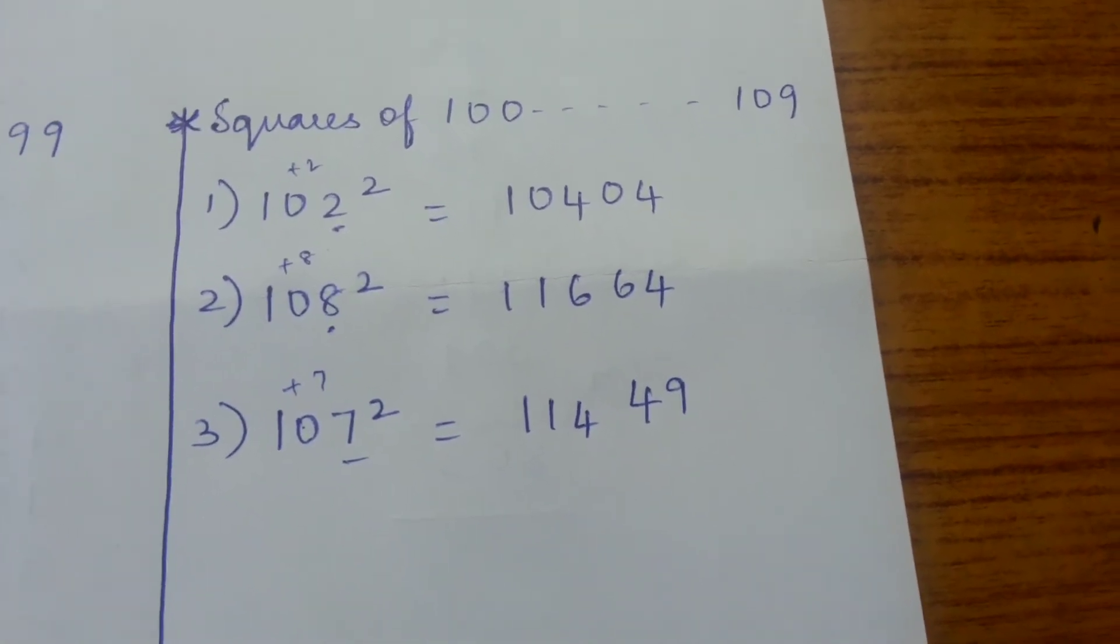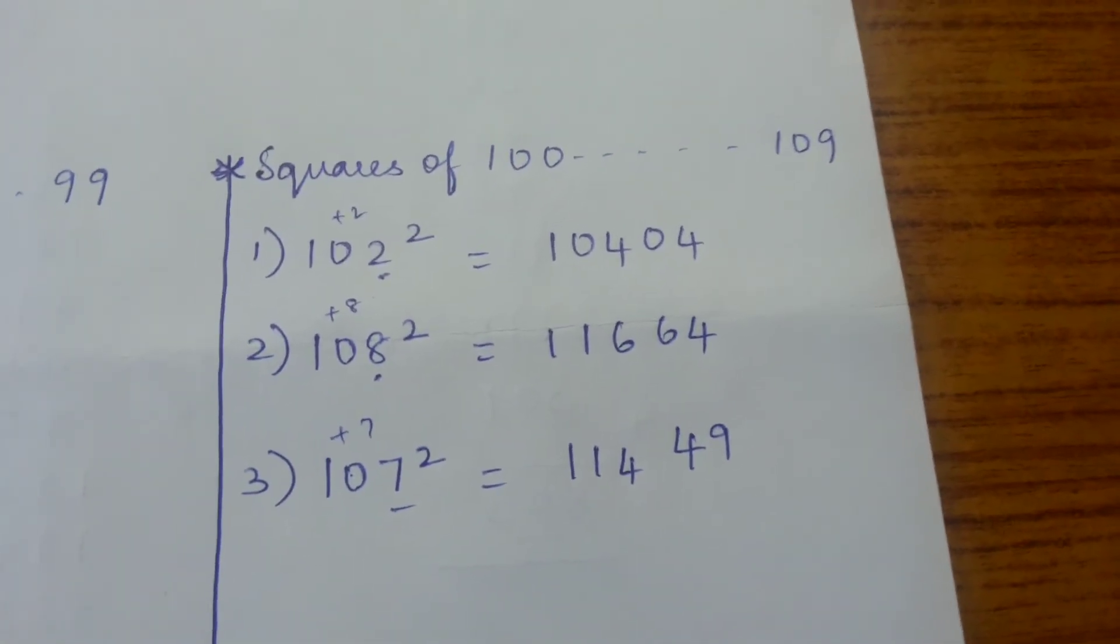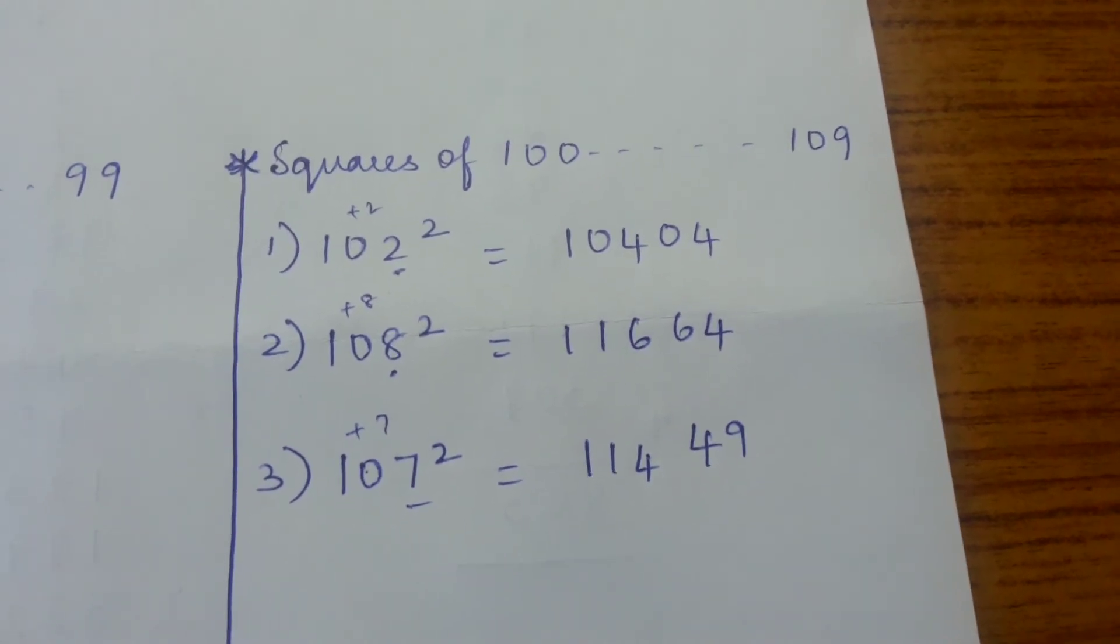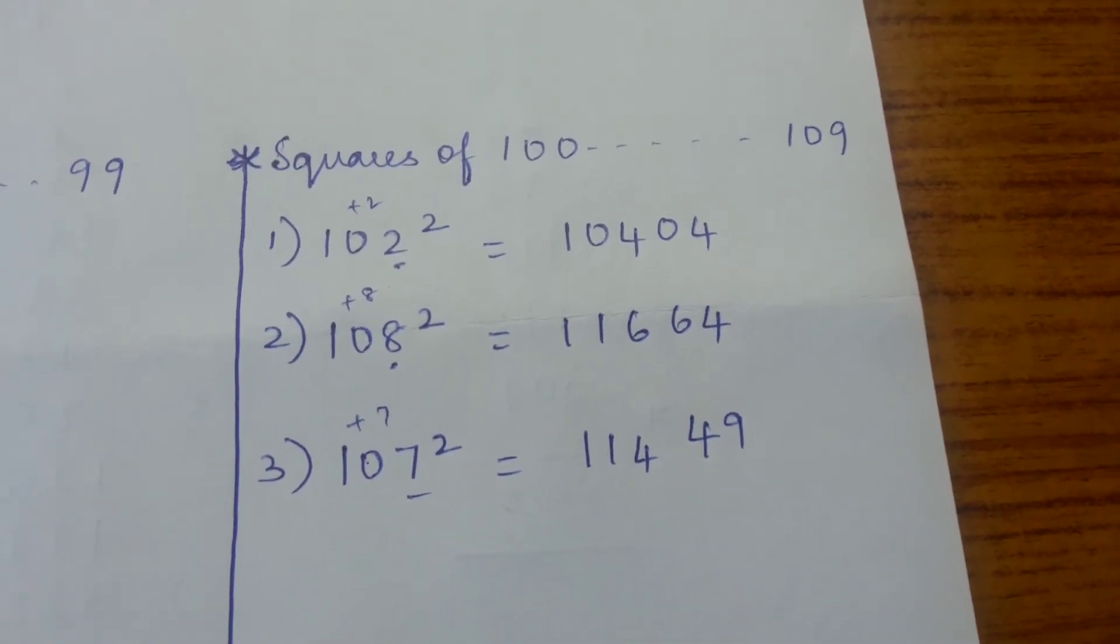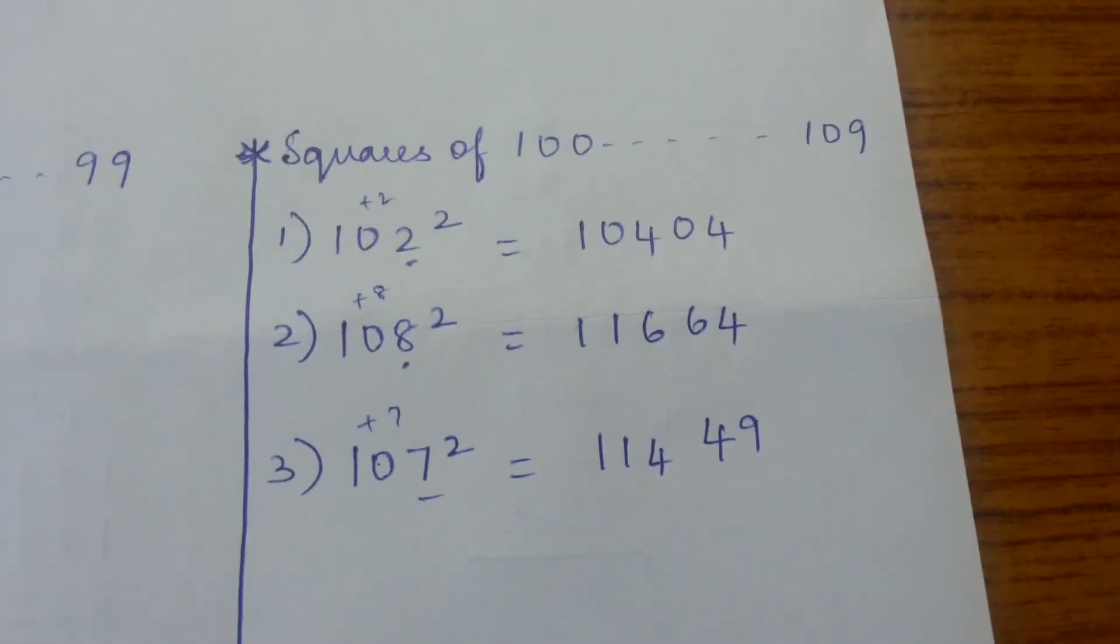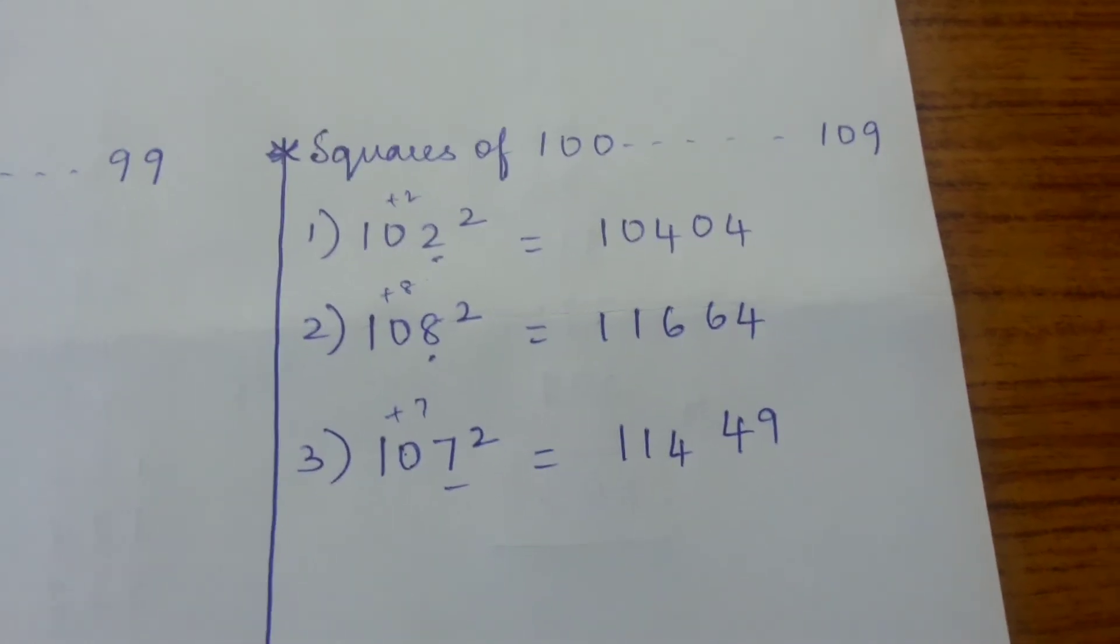Now 102 plus the 2 that we got: 102 plus 2 equals 104. 108 plus 8 equals 116. 107 plus 7 equals 114.